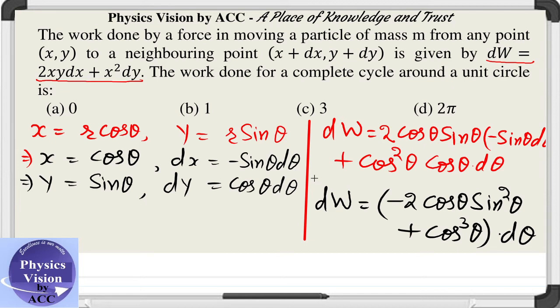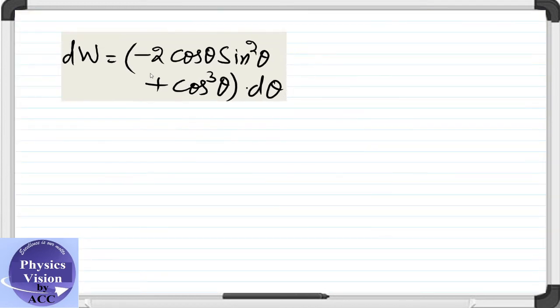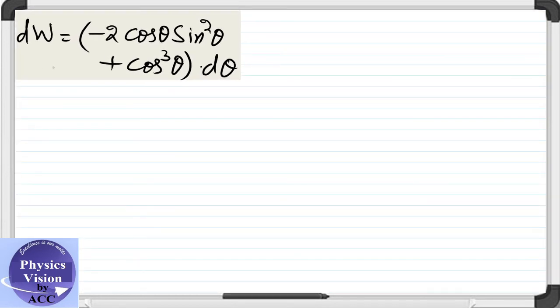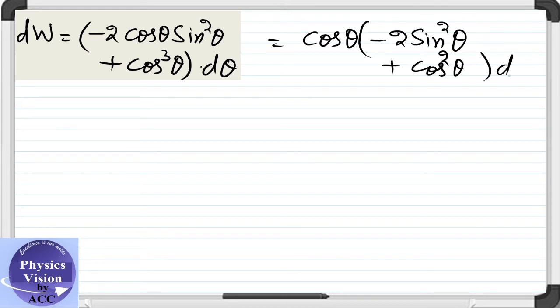So what is the next step? We will solve it by taking the integration. First, let us take cos θ out of the bracket. It becomes -2 sin² θ plus cos² θ. Cos² θ can be written as 1 - sin² θ. Thus it becomes cos θ (1 - 3 sin² θ) dθ.